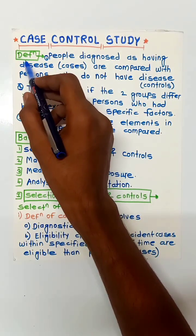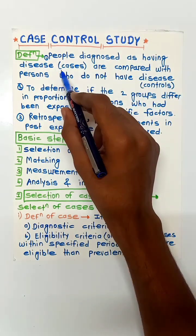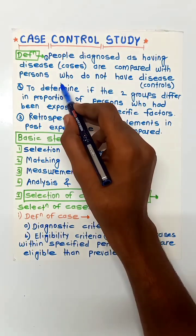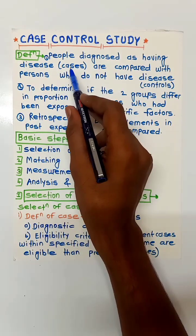The definition of this is: the people who are diagnosed as having disease are called cases and are compared with the persons who do not have disease, which are called controls. This study is done to determine if the two groups differ in proportion of persons who had been exposed to specific factors.